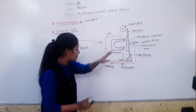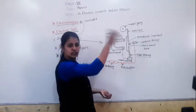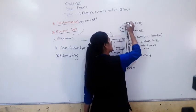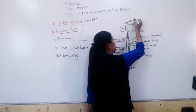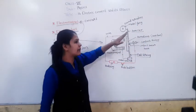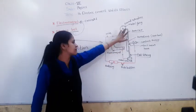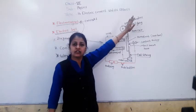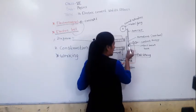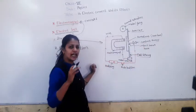As the armature gets attracted towards the magnet, the hammer comes into contact with the metallic gong and strikes it, producing a ringing sound. The contact between the contact screw and the iron bar then gets broken. Are you getting this? The sound is produced as the hammer hammers the metallic gong.